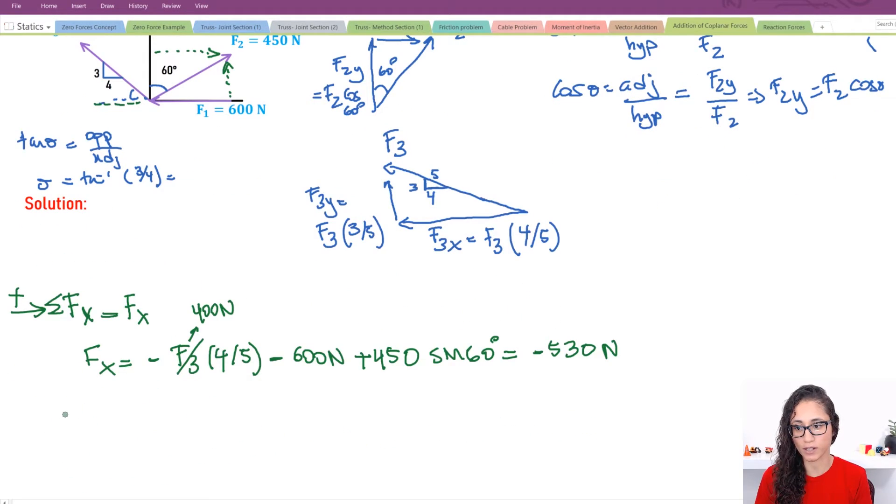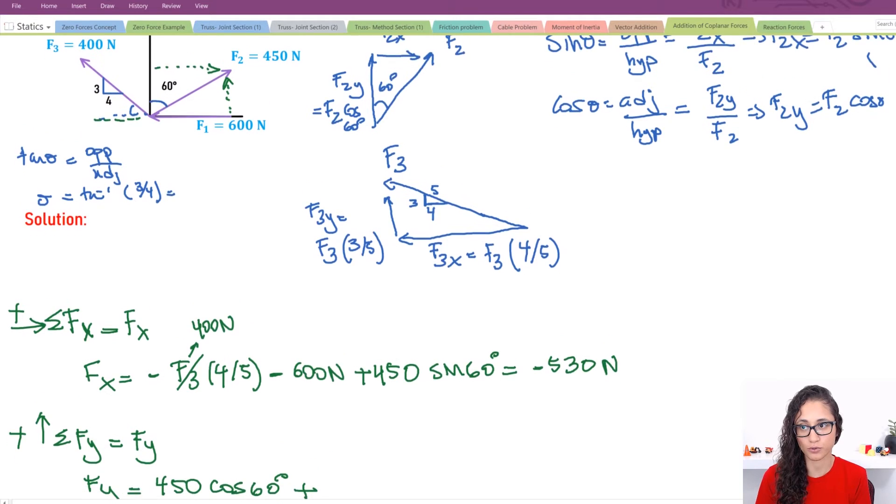Okay, so now let's do Fy. So I have the summation of the forces on the y equals to Fy. Let's select this to be positive. So I have Fy is equal to, so we have F2y, which is 450 times cosine 60. And then I have plus F3, which is 400 times three over five. We're doing this component. And that's pretty much all the forces that we have on the y direction. For F1, we don't really have the y, we just have x and we already used it here. So this is equals to 465 newtons.